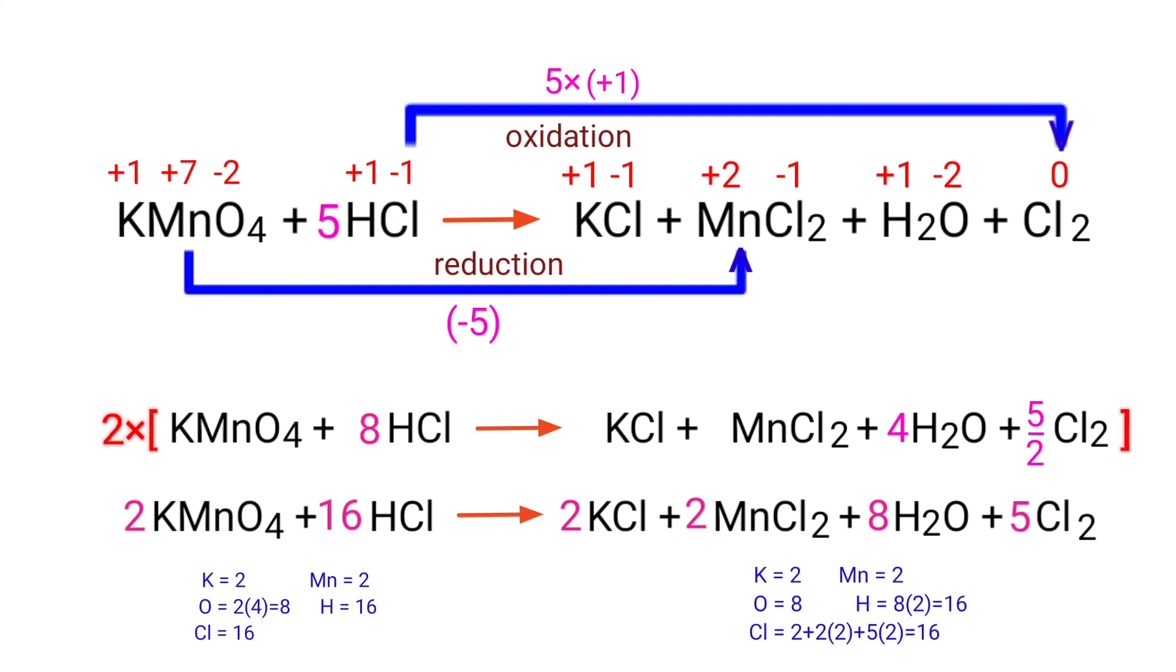The equation is now balanced. There are 2 potassium atoms, 2 manganese atoms, 8 oxygen atoms, 16 hydrogen atoms, and 16 chlorine atoms on both sides.